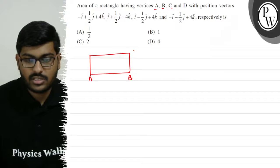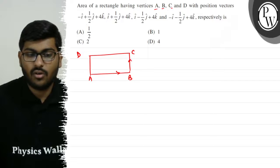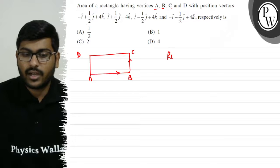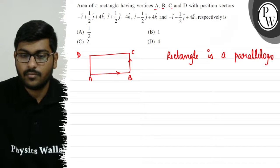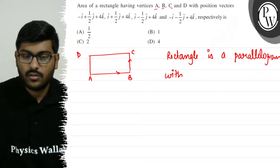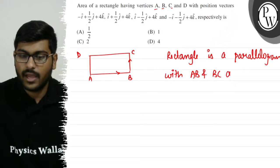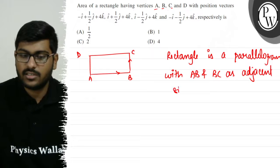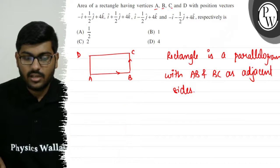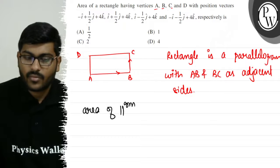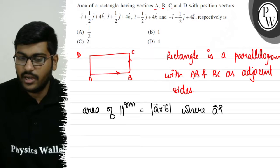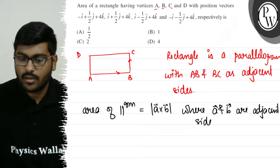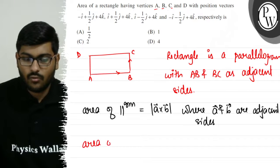We have a rectangle A, B, C, D where AB and BC are adjacent sides. We know that a rectangle is a parallelogram with AB and BC as adjacent sides. The area of a parallelogram is equal to the modulus of A vector cross B vector, where A vector and B vector are adjacent sides. So the area of the rectangle will be the modulus of AB cross BC.